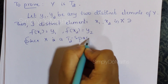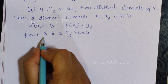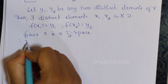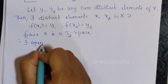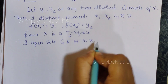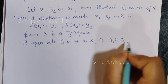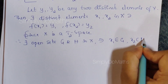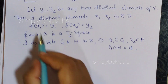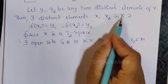Since X is a T2 space, we can apply the definition of T2 space for the elements of X. That is why we consider open sets G and H in capital X such that x1 belongs to G, x2 belongs to H, and G ∩ H = ∅, because x1 and x2 are distinct elements of capital X.